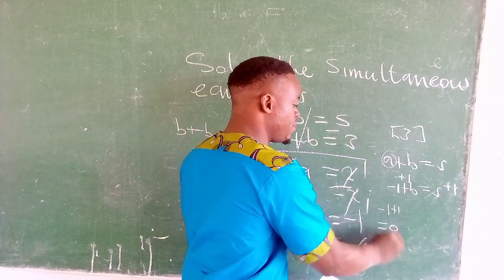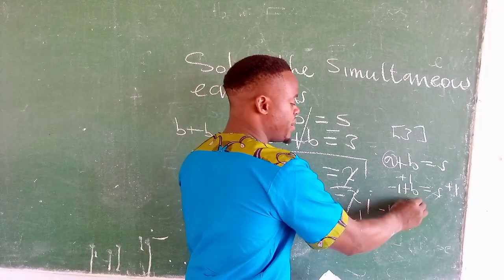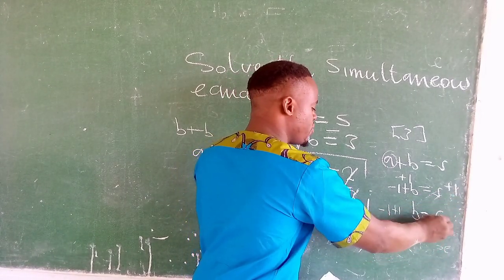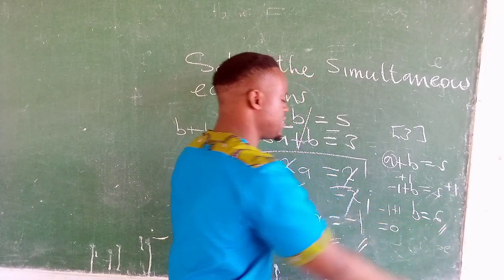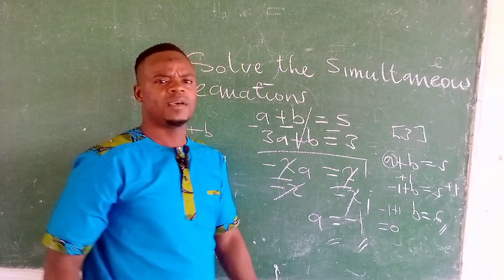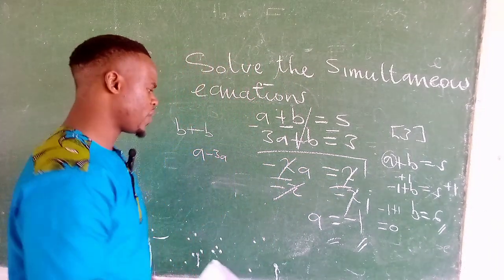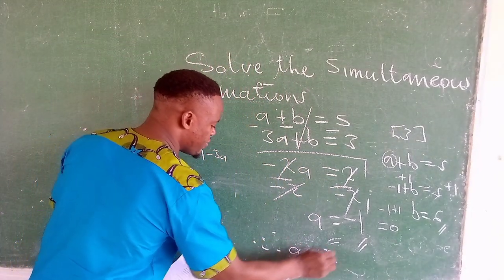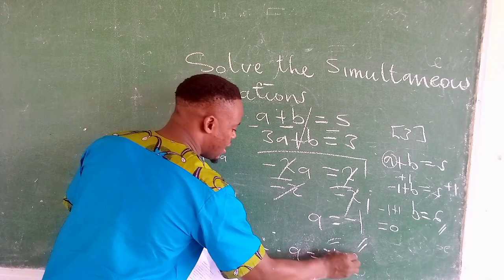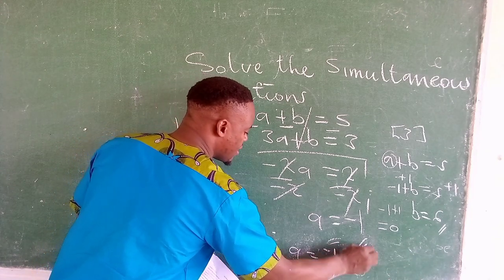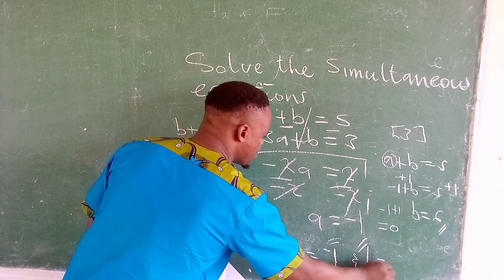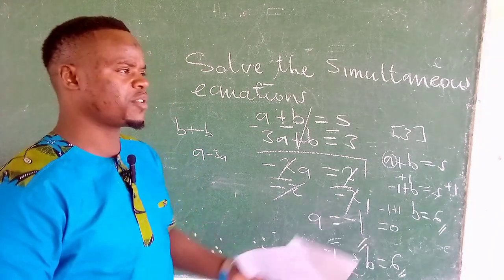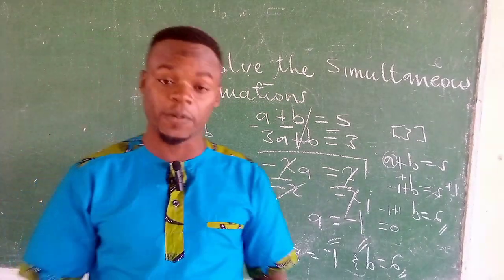So this should be a 0, and we will remain with b. Then 5 plus 1 will be 6. So we can say therefore a is equal to negative 1, and b is equal to 6. So that is what you were expected to solve.